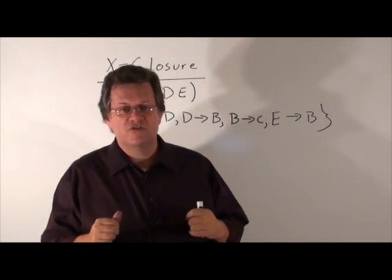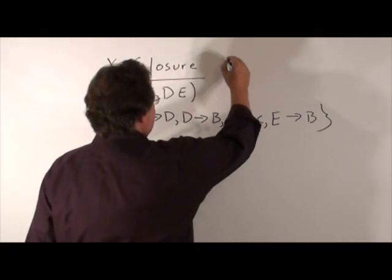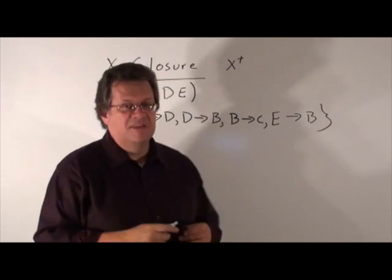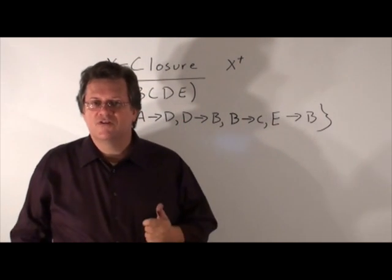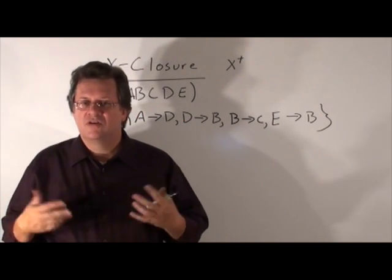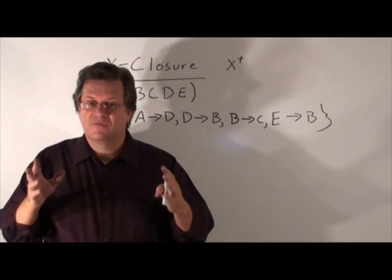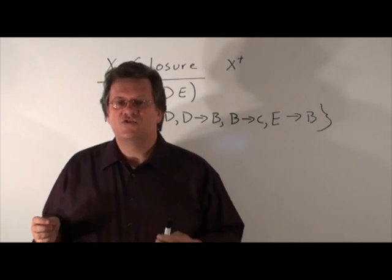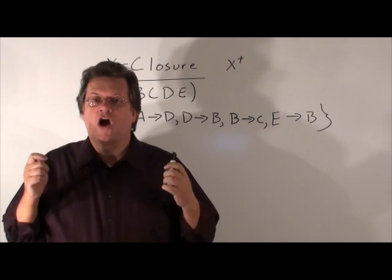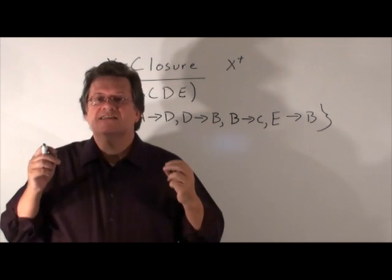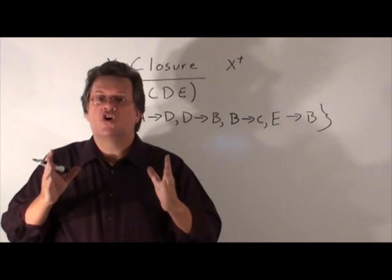Now, we're going to introduce something called X-closure. Typically, X-closure is written with an X and a little plus sign in superscript format. The X refers to one or more attributes from our relation. So F-closure is a set of functional dependencies logically implied. X-closure is a set of attributes derivable by applying Armstrong's axioms.